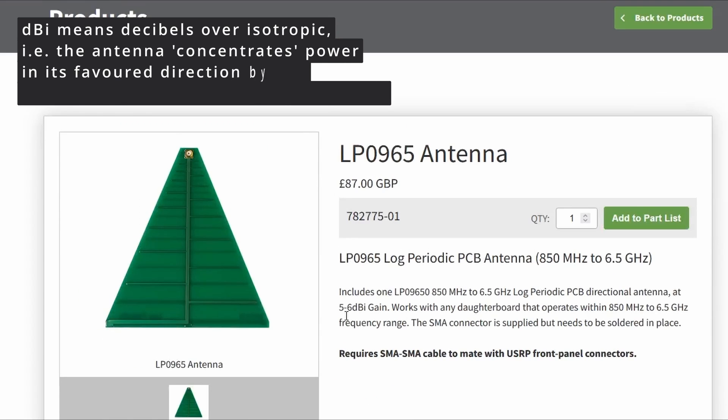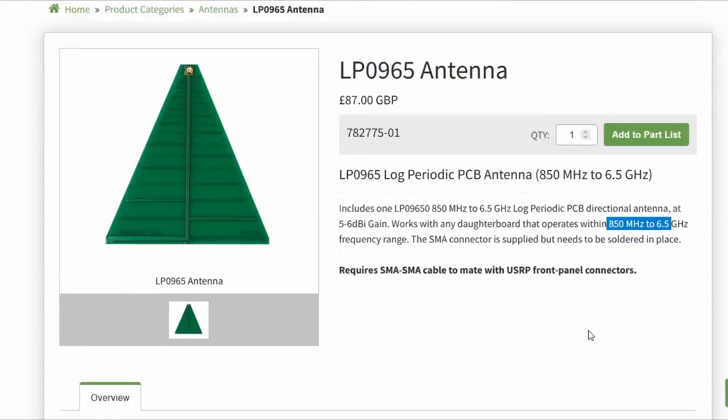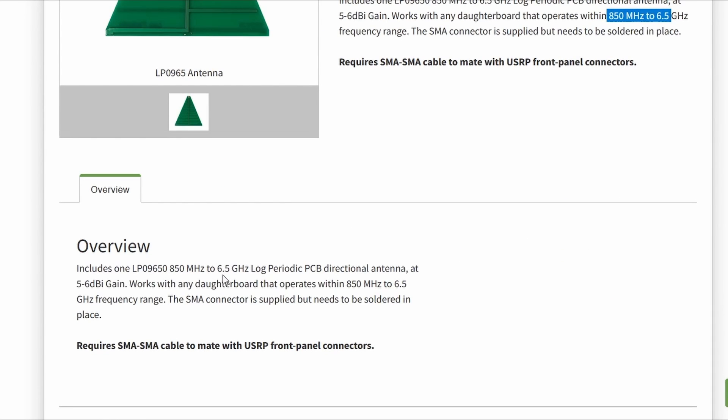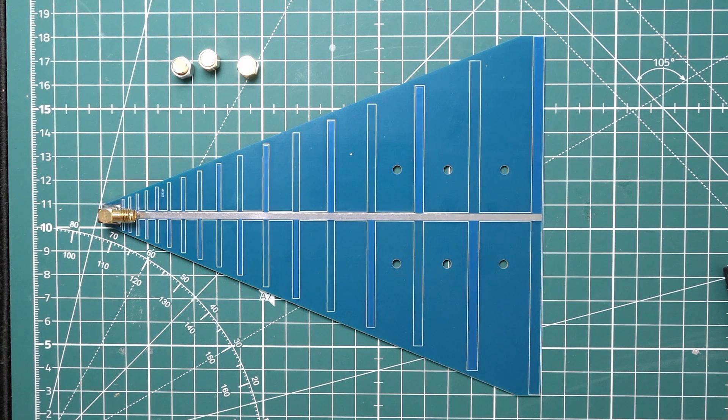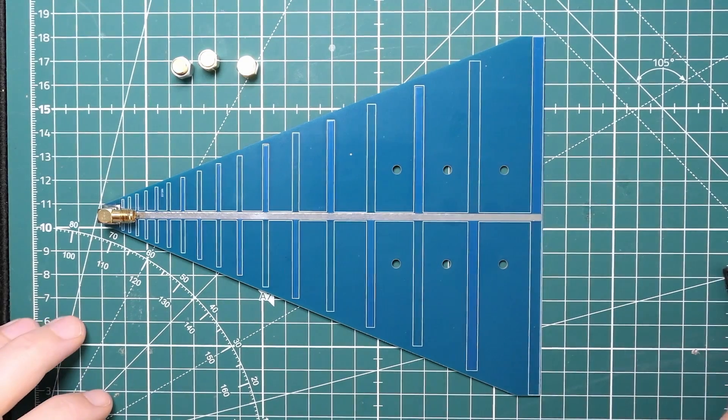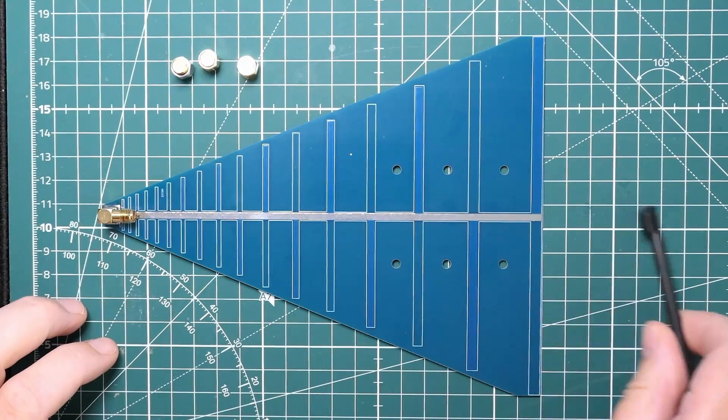There's another one here. This gives you around five to six DBI gain, and it's got a similar bandwidth to the one I bought from AliExpress. They don't really look entirely the same, but relatively close. Of course, I bought one and we're going to have a look at it. So here it is. Yeah, it's exactly sort of 19 and a half centimeters long.